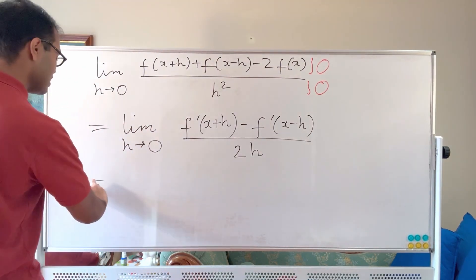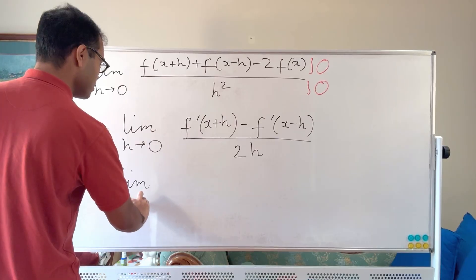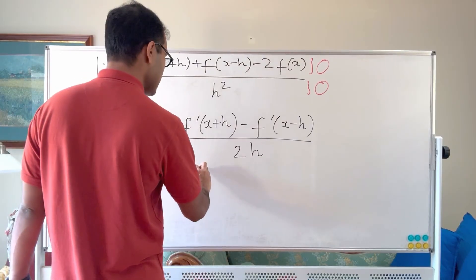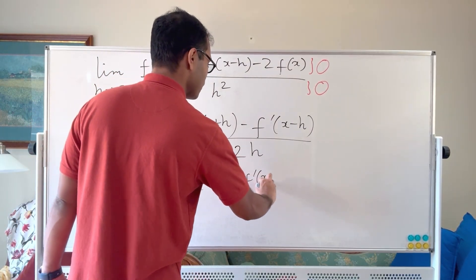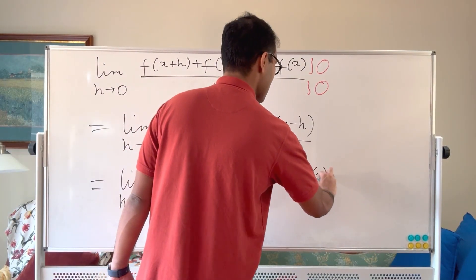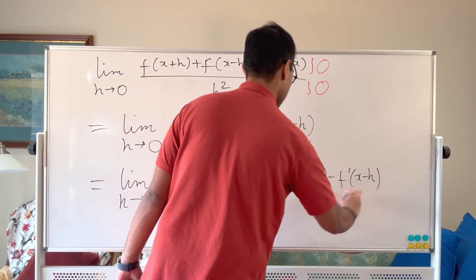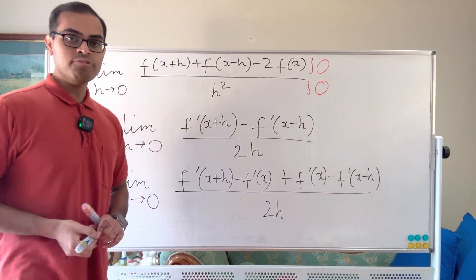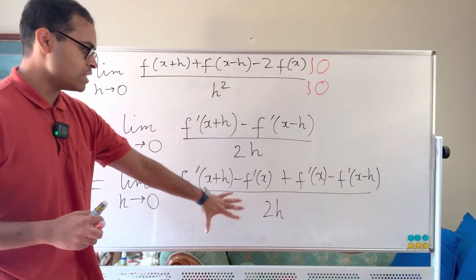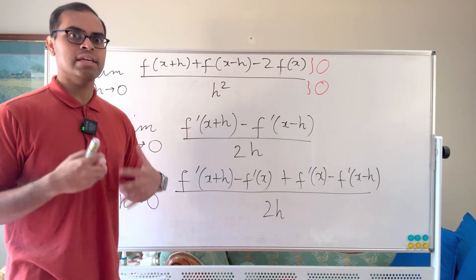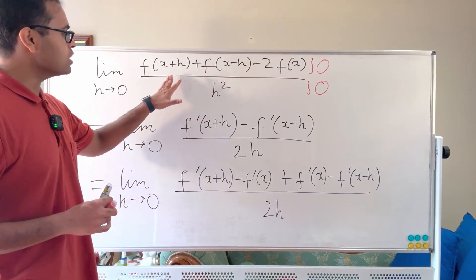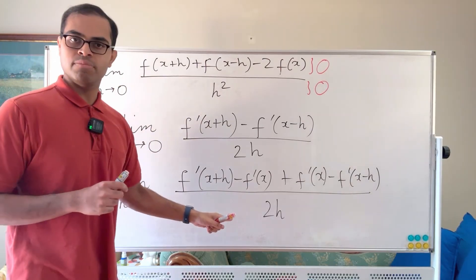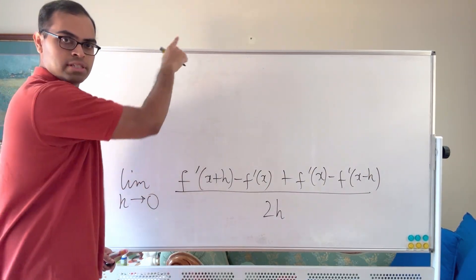What we're going to do is a nice little trick. We're going to add and subtract f prime of x inside the numerator. So we write: f prime of x plus h minus f prime of x, plus f prime of x minus f prime of x minus h, all divided by 2h. Now we're almost there, but we have to be very careful — we want to show that this limit actually exists and equals f double prime of x, and L'Hôpital's rule will then guarantee the original limit equals f double prime of x.